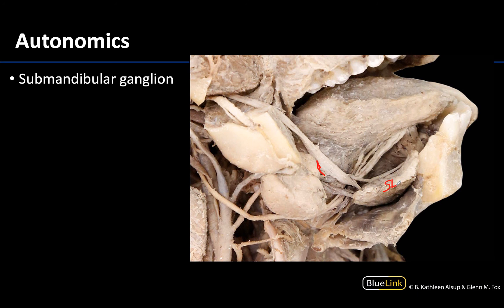So that's it. Those are the parasympathetic autonomic structures I wanted to discuss for this video — just two ganglia and a nerve. Thank you for your time and attention with this video, and have an amazing day!